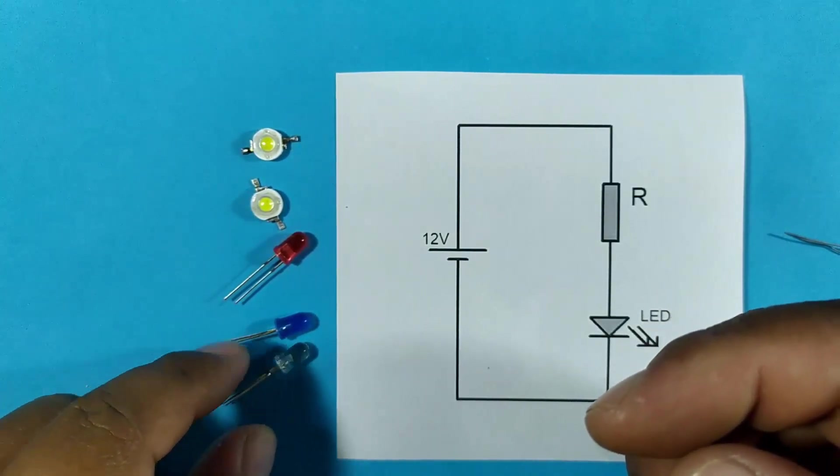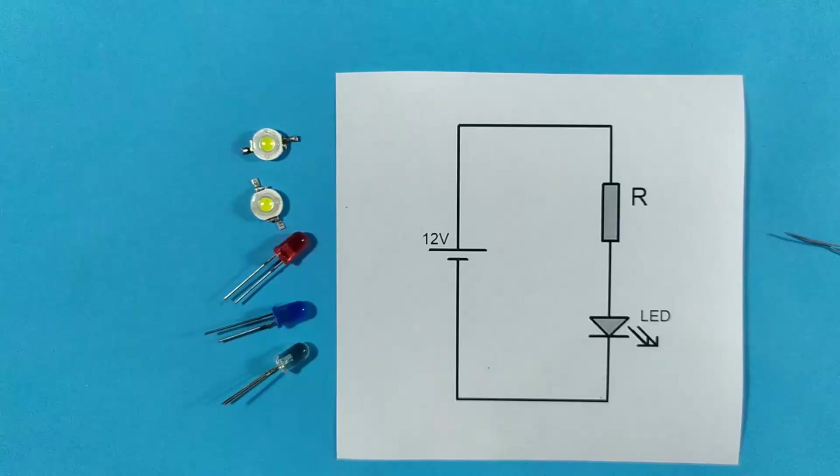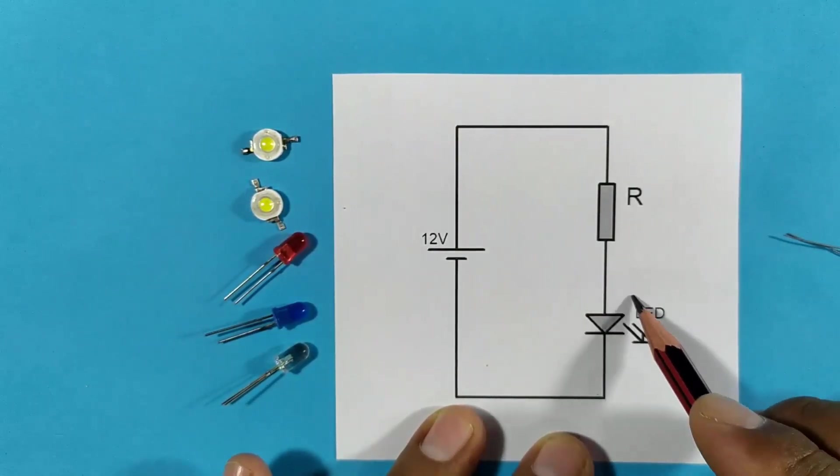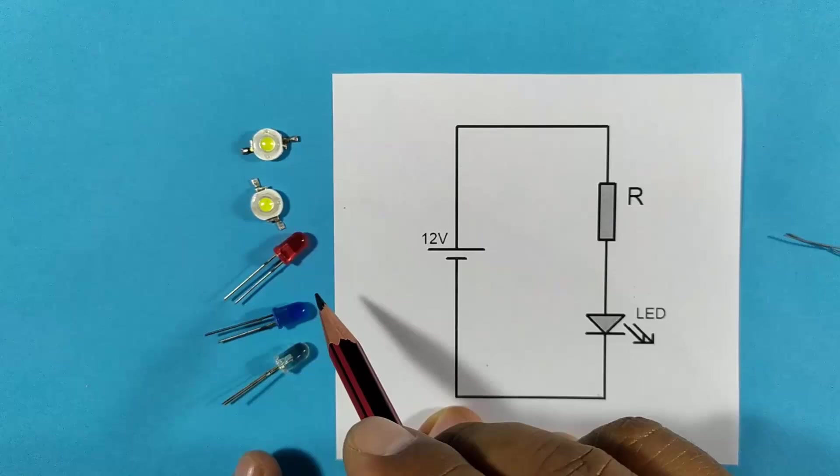And depending on the color of the LED, the LED will need more or less voltage to be able to work. This means that between the ends of the LED, there will have to be a voltage greater than that required by its color.